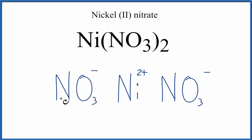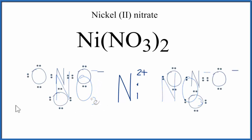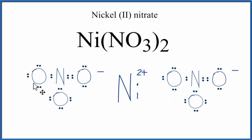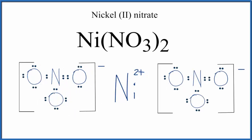Let's take these NO₃ minus — this nitrate ion — and replace that with a Lewis structure. Next, we'll place brackets around the nitrate ion, and that makes this the Lewis structure for nickel two nitrate.